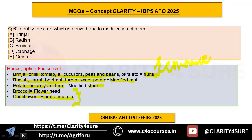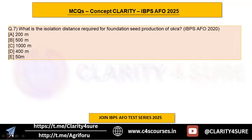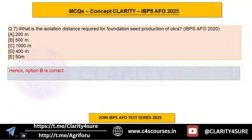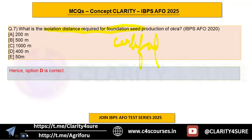Question number seven: what is the isolation distance required for foundation seed production of okra? This was an exact PYQ from IBPS A4 2020. The answer is option D, 400 meters. You need to focus on isolation distances for different important crops for both foundation and certified seeds — at minimum, know the range, whether it is in the 200s, 300s, or 400s.